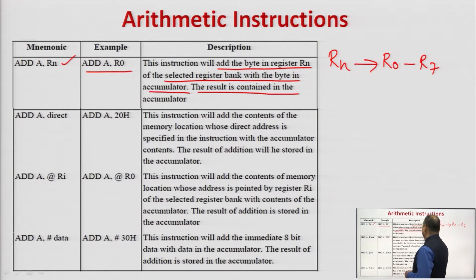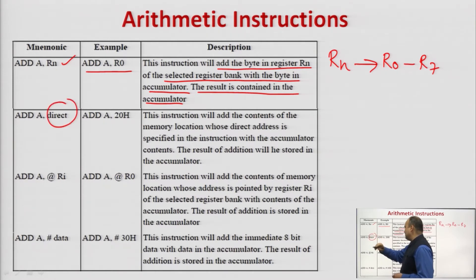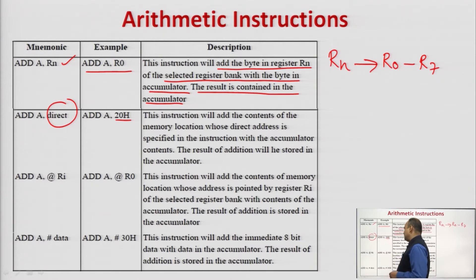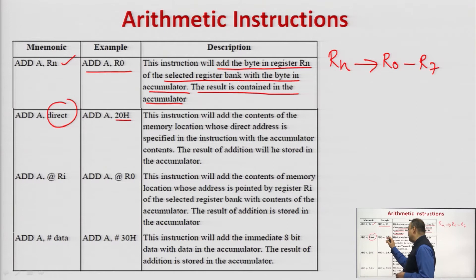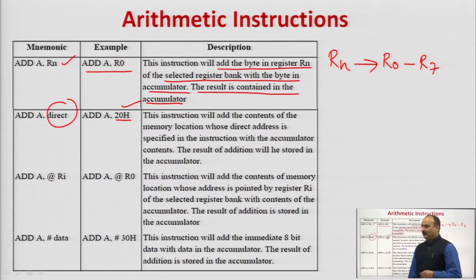The result is stored back into the accumulator. The second instruction is ADD A, direct. In place of 'direct' we specify the direct memory address. This is the direct addressing mode because the address of memory is directly specified with the instruction. Whenever the microcontroller executes this instruction, it adds the content of the memory location whose address is directly specified with the content of the accumulator, and stores the result into the accumulator.